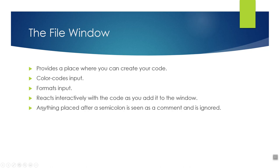One important thing to note: anything placed after a semicolon is seen as a comment and is ignored. I suggest new editors add comments in there. Anything after that semicolon is ignored on that line. So as you're writing code, you can add a comment saying 'this is what this line does.' That way, later if you have to go back and look at it, you'll know what you did.